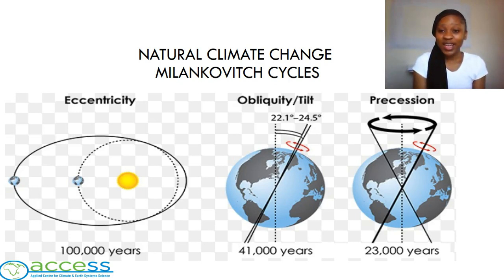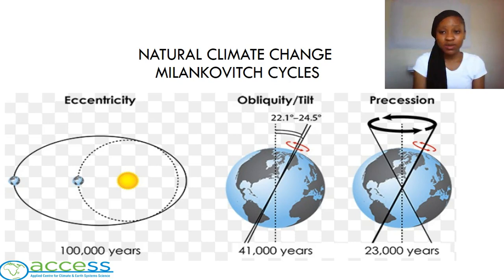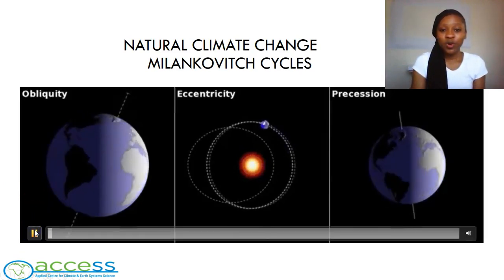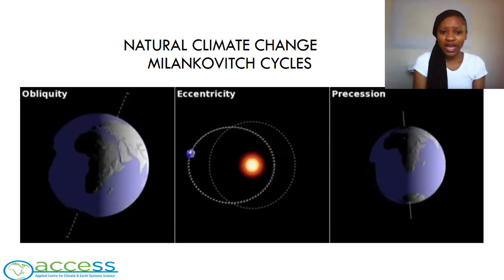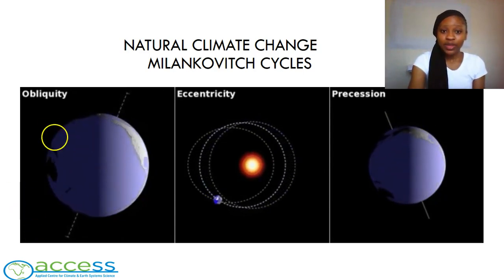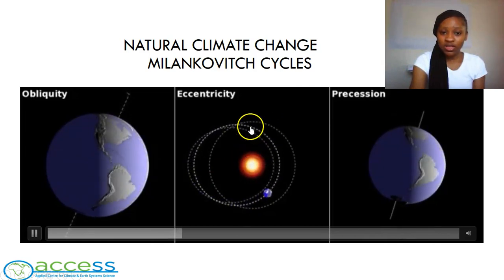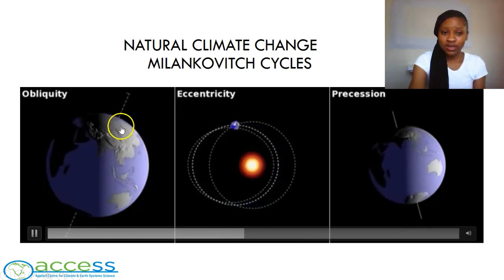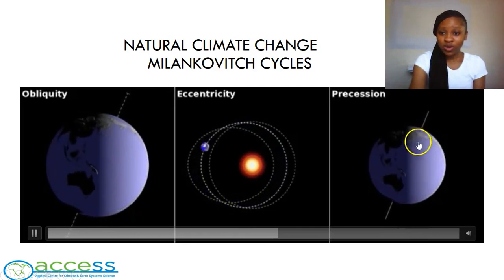In the third cycle, known as precession, the Earth wobbles on its top over a course of 23,000 years. This cycle determines the timing of the seasons that we have. This video in the form of a model will help us observe how the cycles occur. As we can see: in eccentricity the Earth's orbit gradually changes from circular to elliptical; in obliquity the Earth is tilted; and in precession the Earth is wobbling on its top — all three cycles occurring at the same time.